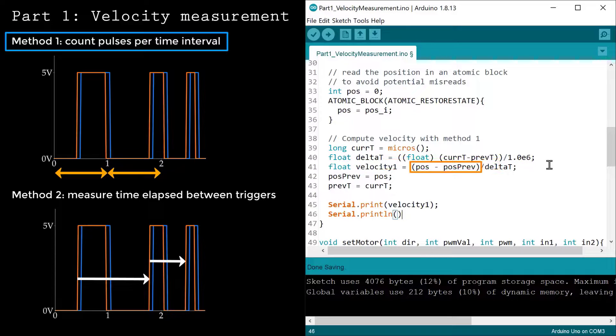Next, I'll compute the difference between the current and previous encoder count. Taking the ratio of these two quantities estimates the speed in units of encoder counts per second.